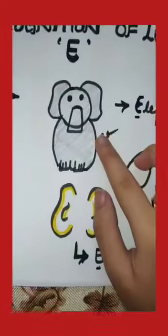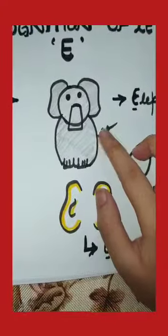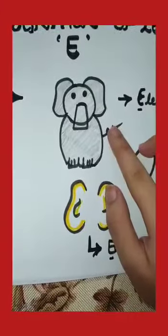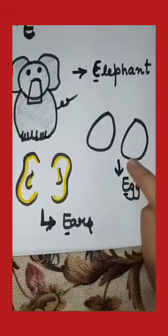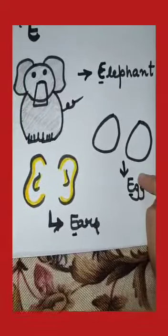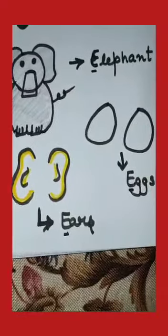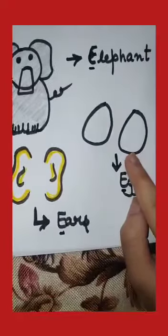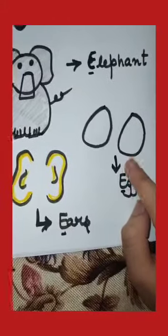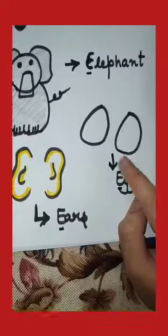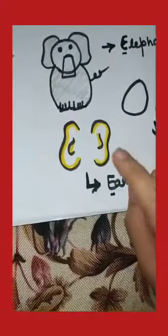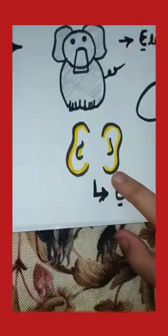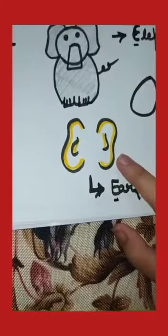E for elephant. Elephant means haathi. Then E for eggs. Some students eat eggs and some are non-vegetarian and some are vegetarian. E for eggs. They are of white color and are called in Hindi as unday. Now the next is E for ears. Ears means your kaan.